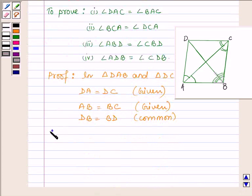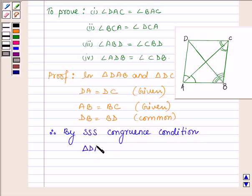Therefore, by SSS congruence condition, triangle DAB is congruent to triangle DCB.